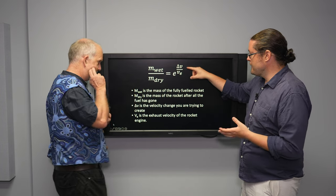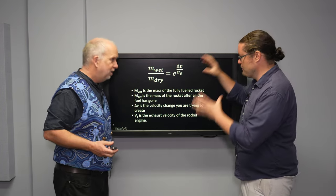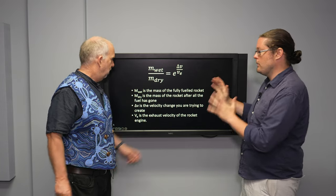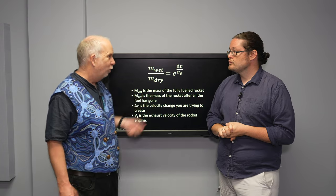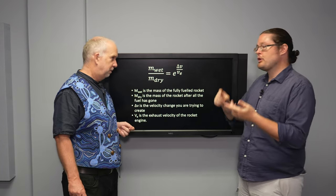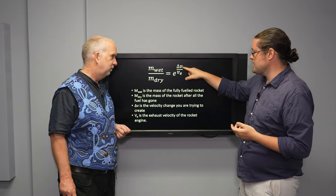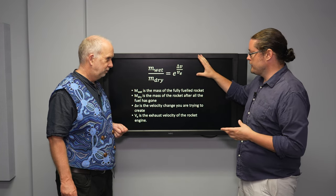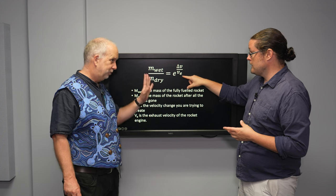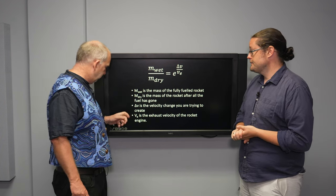Now, delta V is the thing that we're trying to achieve. This is the important thing, right? That's what we want. So we'll know this because of our mission. Like, if you want to go to low Earth orbit, we need about 9 kilometers a second of delta V. So we say we're going to low Earth orbit. That's going to determine what delta V we need. So now we have to figure out everything else.